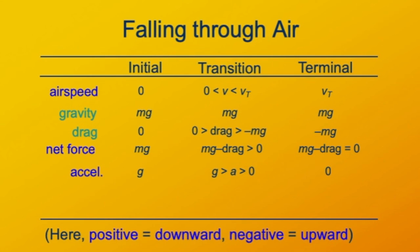The acceleration is just the net force divided by the mass. So initially, the acceleration is g. At the end, during the terminal phase, the acceleration is zero. And in between, the acceleration is decreasing from a value of g to a value of zero.